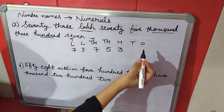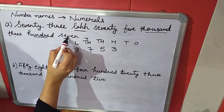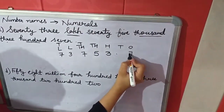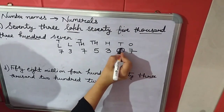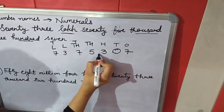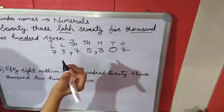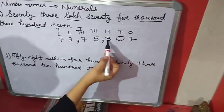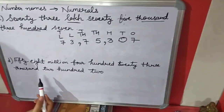Then 7 — but we have two places here and there is only one number, so this number will come below the ones place. There is no number in the tens place, so we will write 0. Now we will put commas here and here. That gives us 73 lakhs, 75,307.